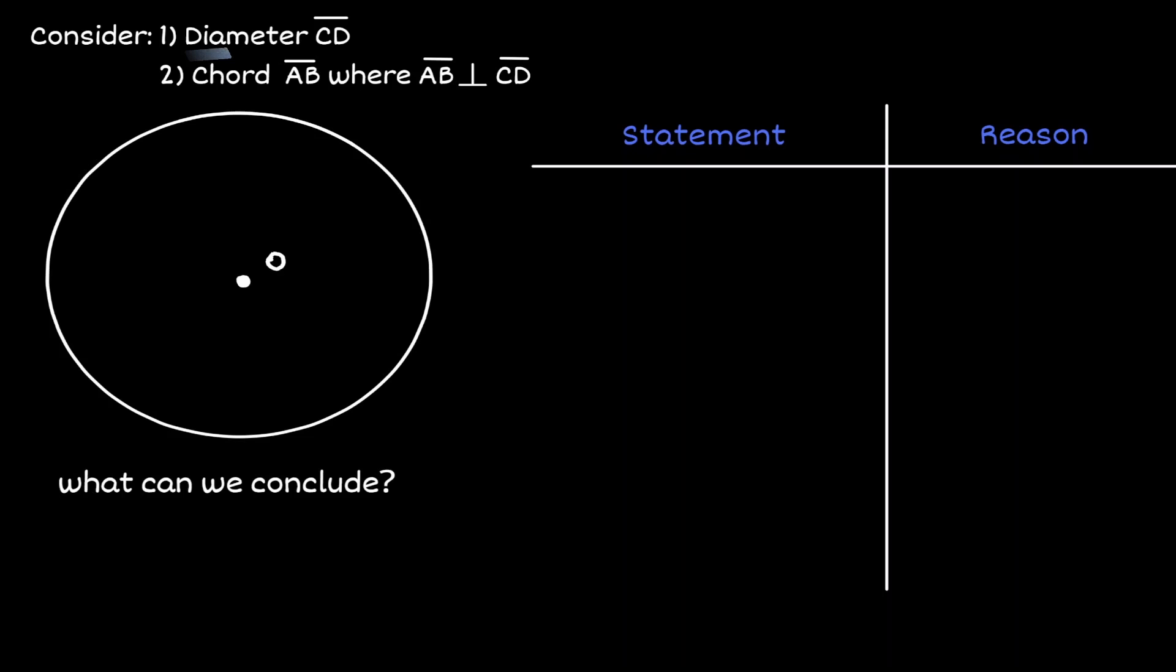Given any diameter, which in this case, let's call it CD. And any perpendicular chord to the diameter, let's call it AB.